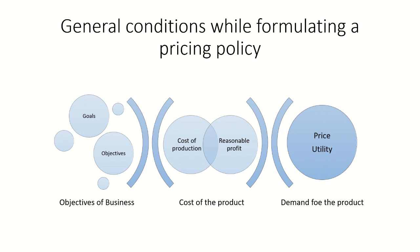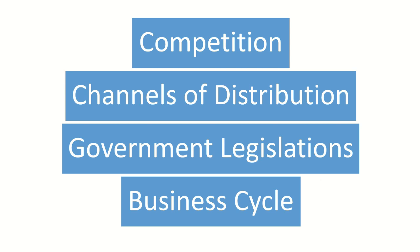When we are selling a product, we need to recover the cost and also earn some additional profit, so the cost of product is an important condition. The third condition is demand for the product — price and utility are directly proportional, so we should consider demand before fixing the price. The fourth condition is competition, which is a major factor that determines pricing.